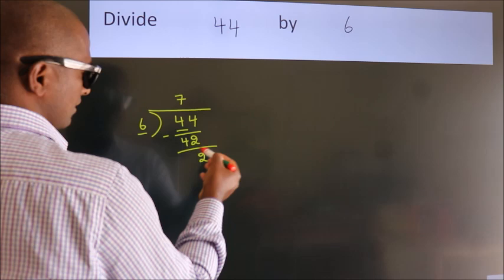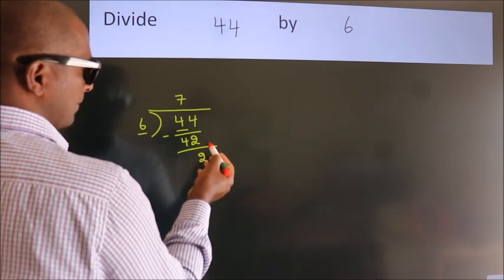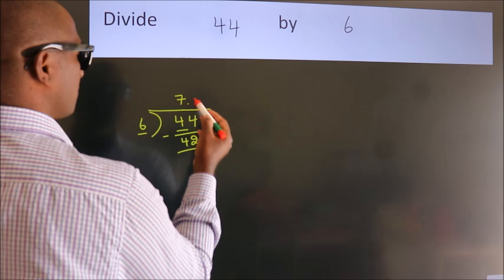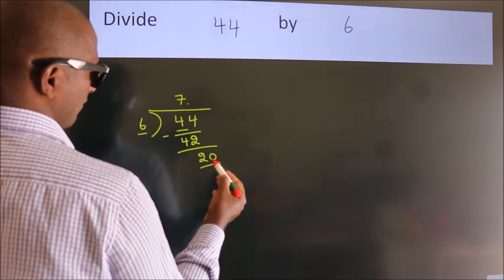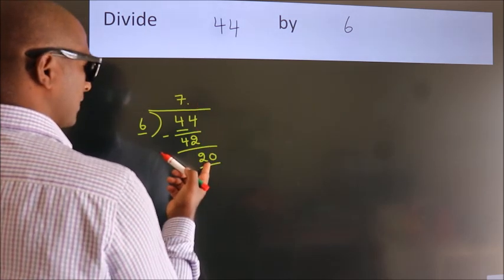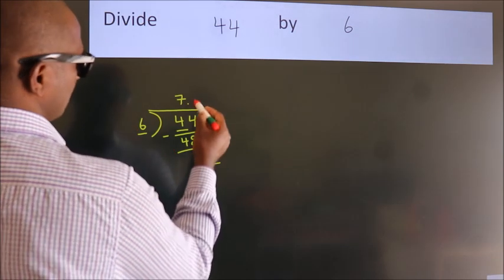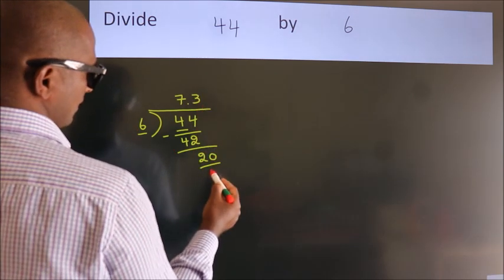After this, no more numbers to bring down. So what we do is, we put a dot and take 0. So, 20. A number close to 20 in the 6 table is 6 times 3, which is 18.